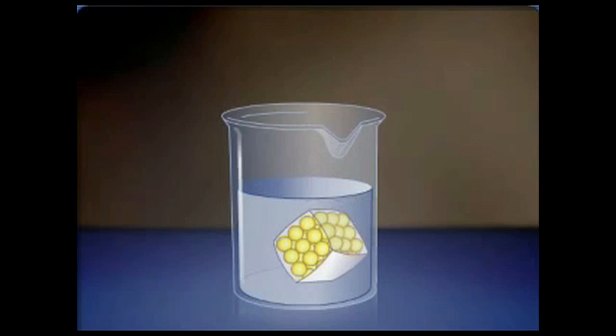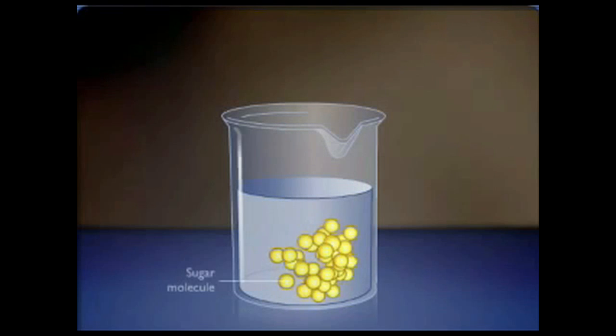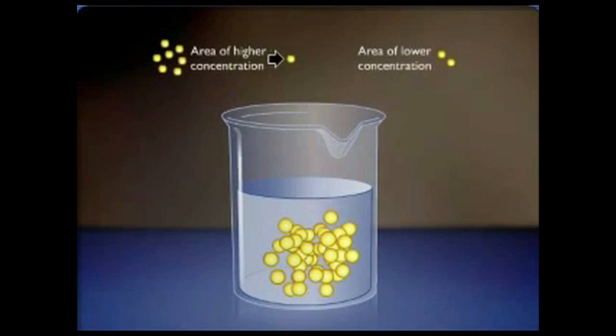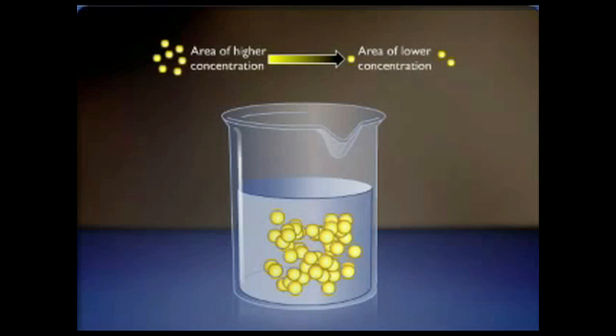When the lump is dropped into the water, it begins to dissolve. Individual sugar molecules move randomly and constantly from the area where they are common to the area where they are scarce. This type of motion, when molecules move from areas of their higher concentration to areas of their lower concentration, is called diffusion.